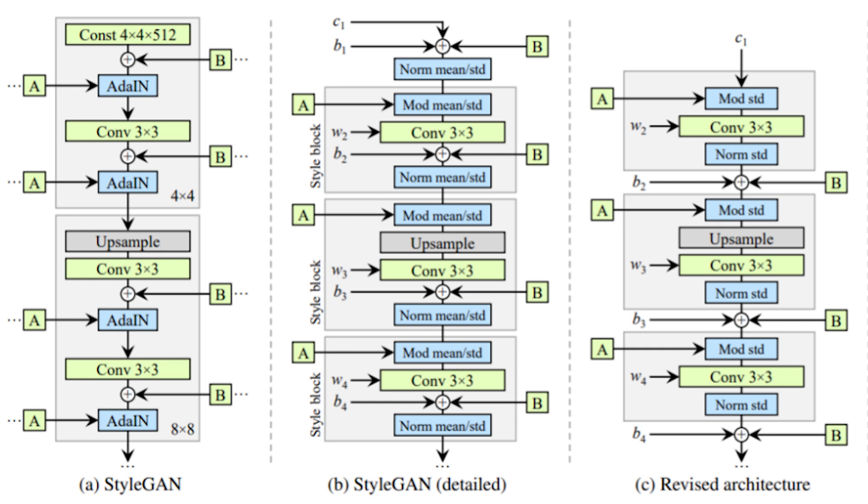In the original StyleGAN all operations were done inside the style block. The authors thought that it wasn't necessarily a good thing to be adding inconsequential noise with a set scale to modulated feature maps which had a variable scale. Thus they revised the architecture to move this inconsequential noise to be outside of the style blocks as you can see here.